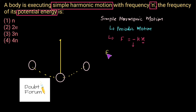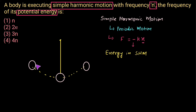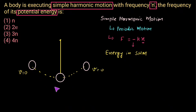The bob travels between these two extreme points. When the bob is at one of the extreme points and travels back towards the mean position, the moment it passes through the mean position it will have maximum velocity. Then it travels towards the other extreme point where it will have zero velocity. It changes direction and moves back towards the mean position. At the extreme point the velocity is zero, but at the mean position the velocity is maximum.